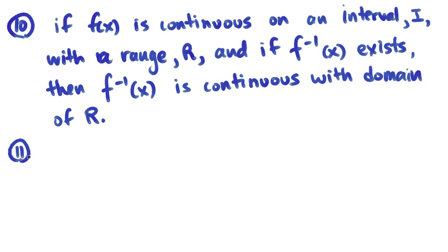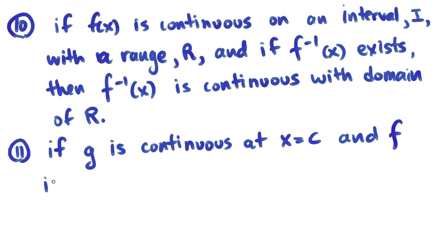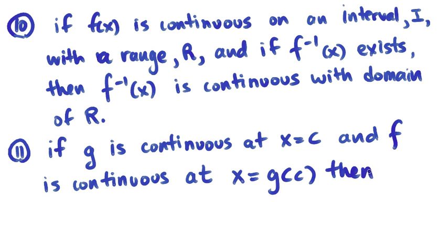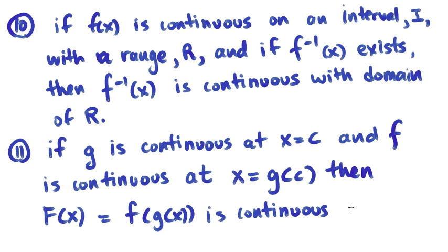Rule number eleven is if g is a function, and it is continuous at a point x equals c, and f is a function, and it is continuous at some point, and specifically g of c, then the composition of those two functions, which is f of g of x, is continuous at that point.